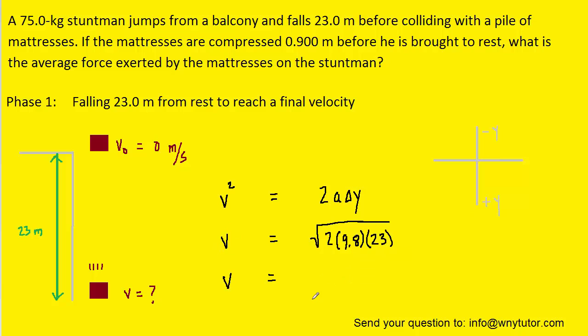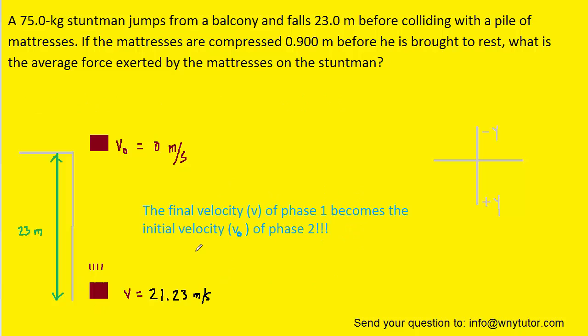And when we plug it in and simplify it on our calculators, we should get a final velocity of approximately 21.23 meters per second. That is the final velocity of the stuntman as he reaches the bottom of the 23 meters.